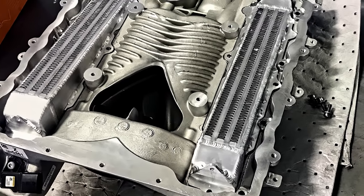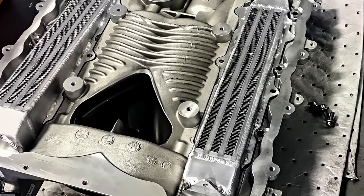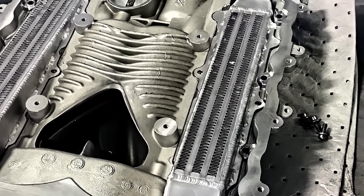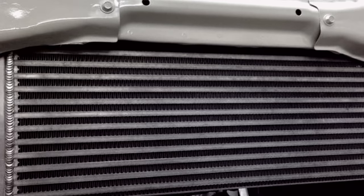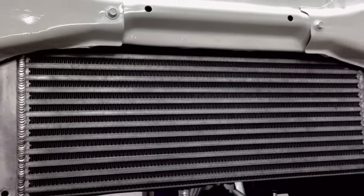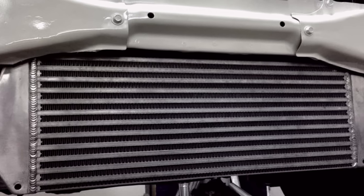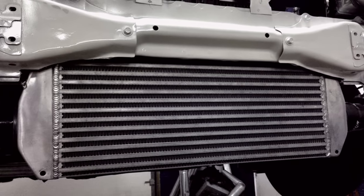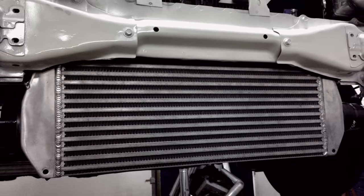Roots and twin screw type superchargers, for example, often rely on water-cooled intercoolers due to their close proximity to the engine's intake track. Other systems such as centrifugal superchargers and turbochargers allow for more flexibility due to their mounting distance from the engine. This allows larger, more efficient air-cooled intercoolers to be placed easily within an air stream permitting higher boost operation.